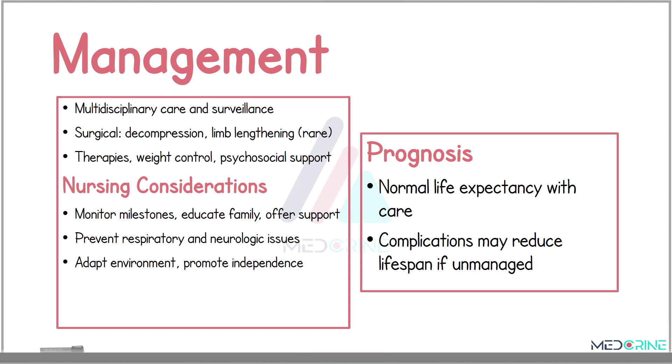Management of achondroplasia requires a multidisciplinary team approach. Routine monitoring includes growth tracking, neurological exams, and sleep studies. Surgical interventions may be needed for decompression or limb lengthening, and supportive care involves therapy, weight management, and psychosocial support.